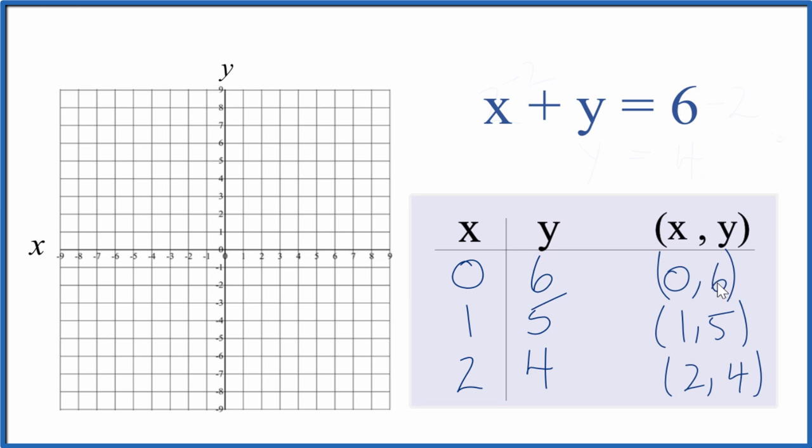These are the points we'll graph for the equation x plus y equals 6. First, we go to x is 0 and y is 6. That's the y-intercept there.